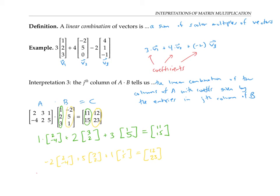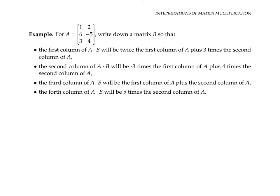If we want to write this out in notation: writing the columns of A as V1, V2, V3, and using the same matrix B, then the columns of C will be — for the first column — one times V1 plus two times V2 plus three times V3, and so on. Let's do an example in which it's useful to think of the matrix product A times B equals C in terms of linear combinations of the columns of A.